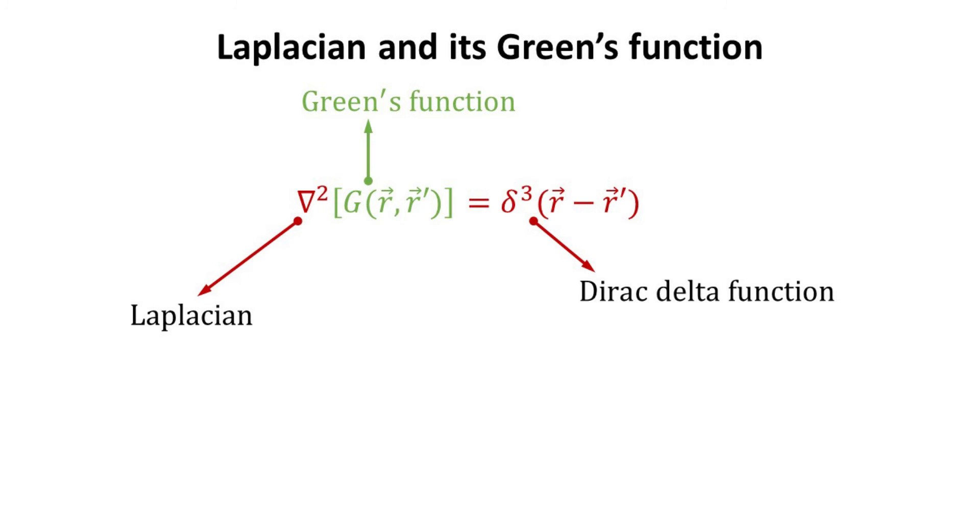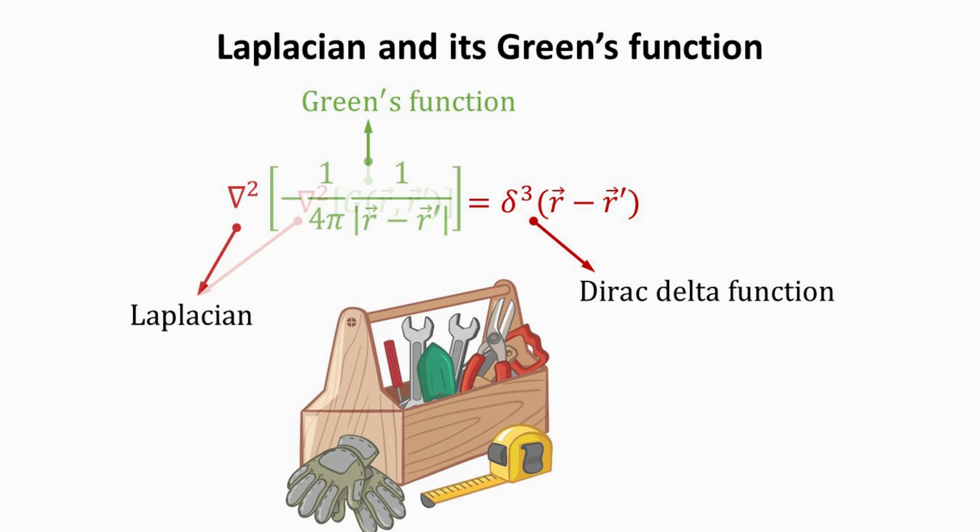By definition, the Green's function for the Laplacian is such that when operated upon, it yields the Dirac delta function. For the 3D Laplacian operator, the Green's function is well known and is given within the green bracket. It is given by one over the modulus of r minus r prime with a factor of 4 pi.